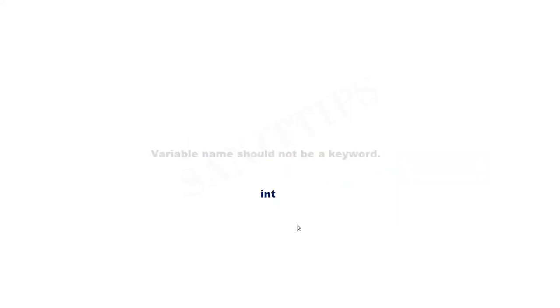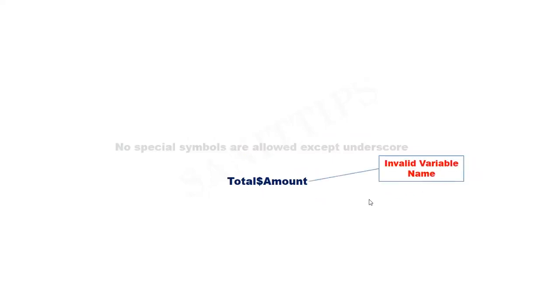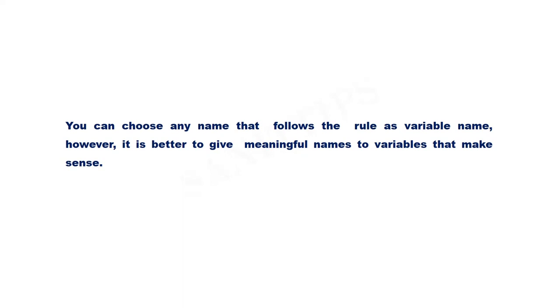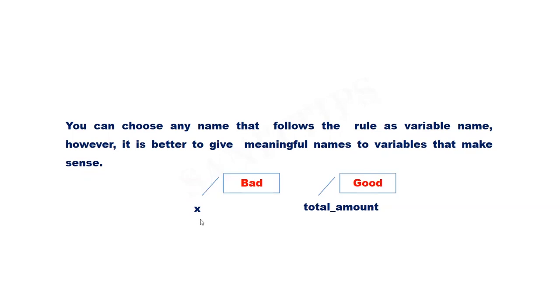Variable names should not be keywords. For example, int is a keyword, so we cannot use it as a variable name — it is invalid. No special symbols are allowed except the underscore. For example, total$amount is an invalid variable name because the dollar sign is not allowed. The only special symbol permitted is the underscore. You can choose any name that follows the rules, however it is better to give meaningful names that make sense. For instance, if you intend to store the value of total amount, it is advisable to name the variable total_amount instead of a generic x.